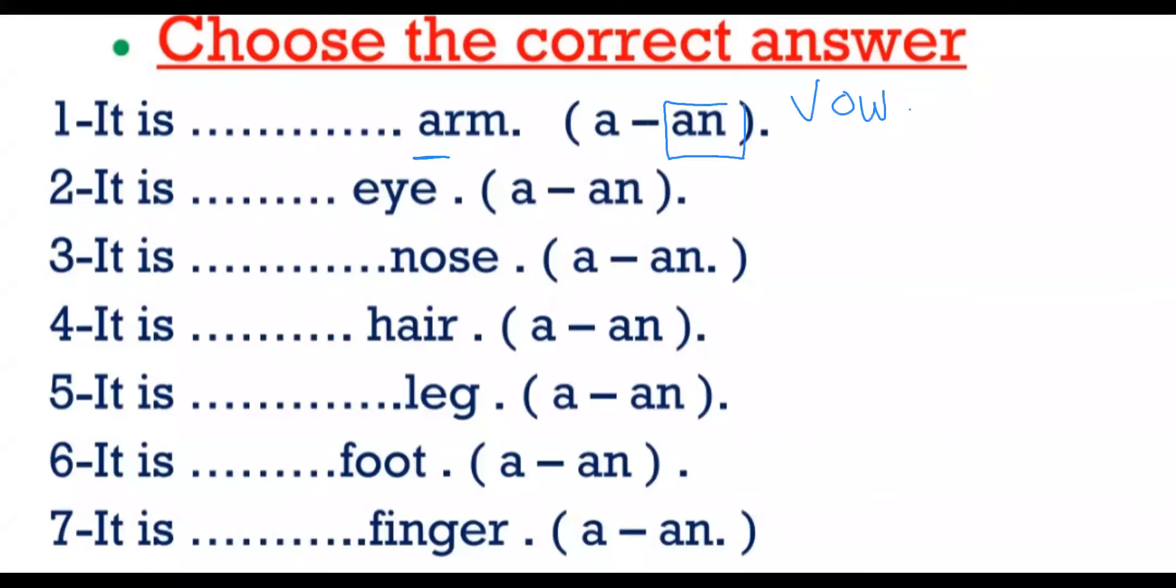An for vowels, vowel sounds: A, E, I, O, and U.